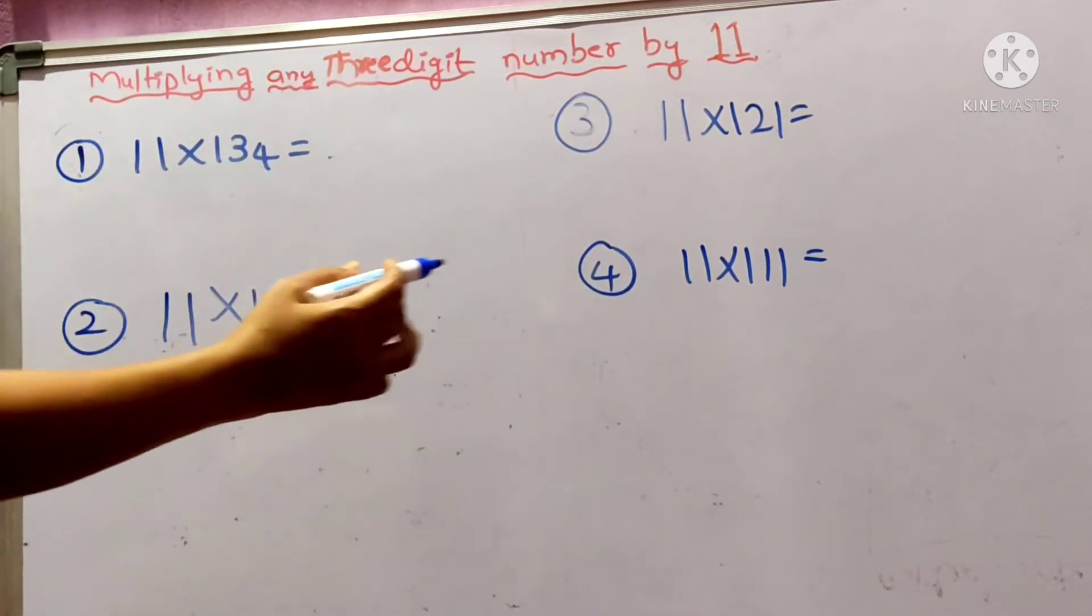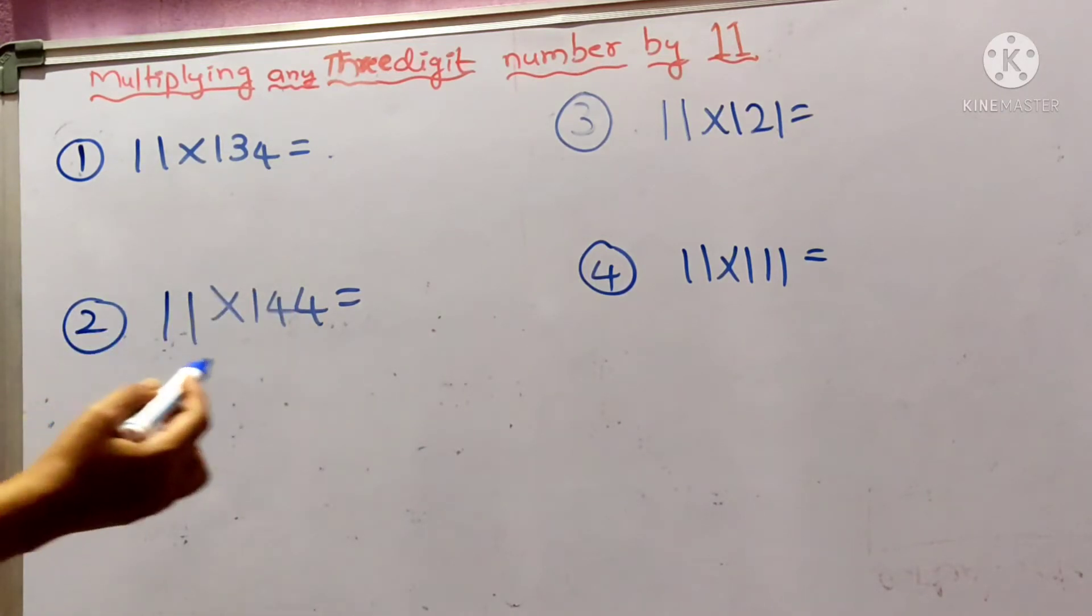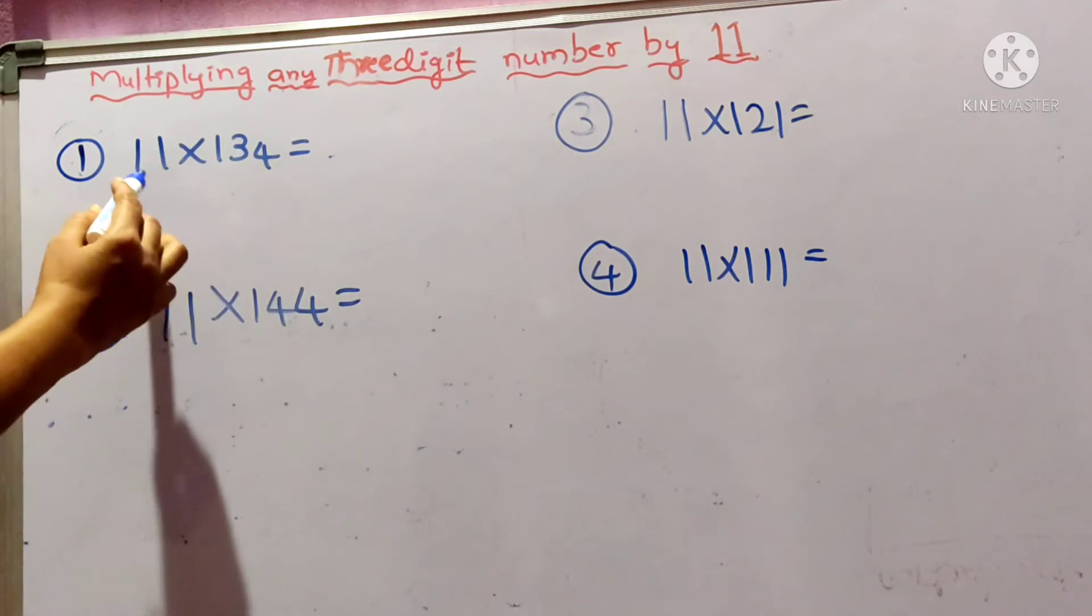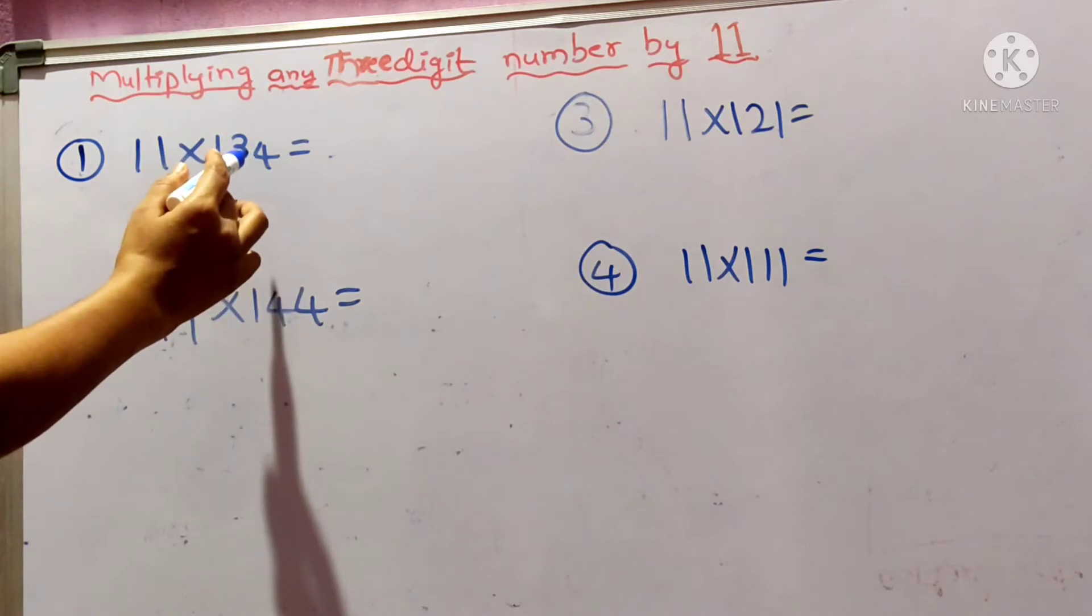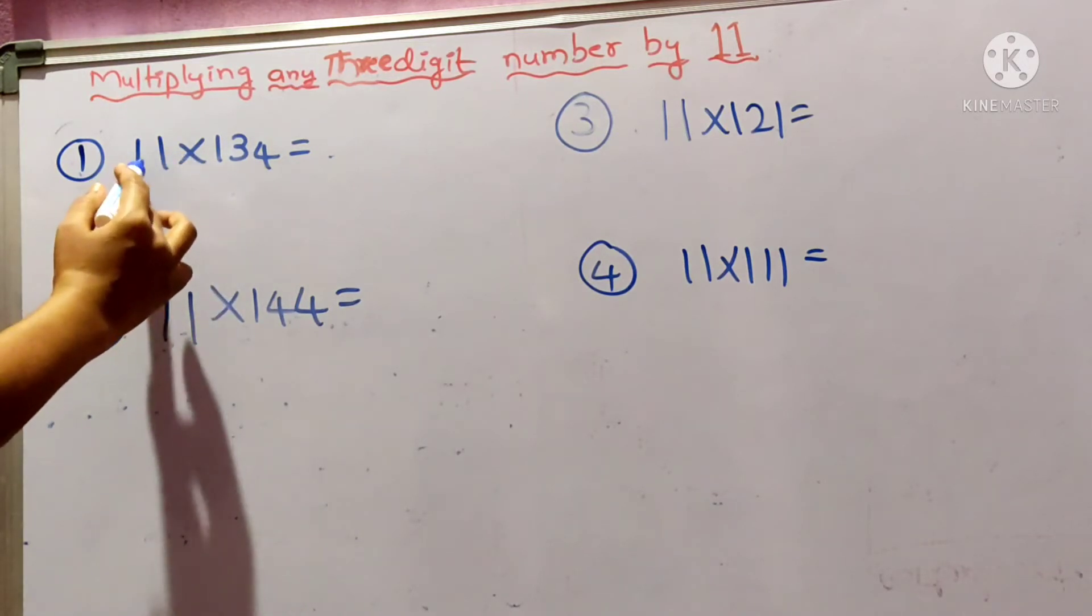I have taken four questions here: 11×134, 11×144, and some other questions. Here, one of the numbers is 11, the other number is any 3-digit number. Already we have discussed in an earlier class how to multiply a 2-digit number with 11. In the similar way here...